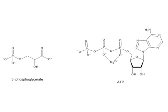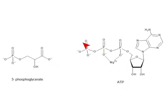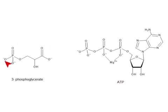To end the reaction we have 3-phosphoglycerate and we have generated an ATP using that high energy phosphate. This will go on to 2PG in the next step, the phosphoglycerate mutase step.